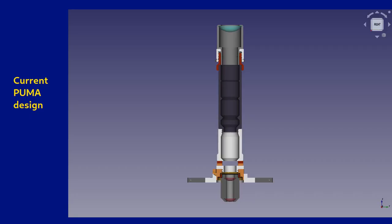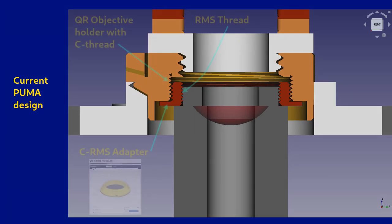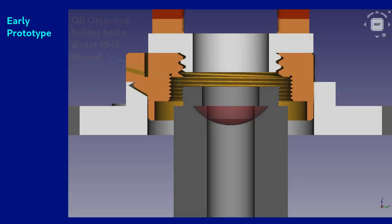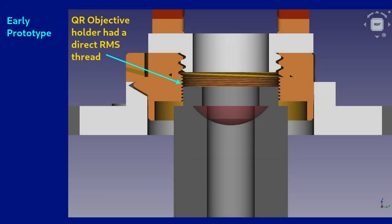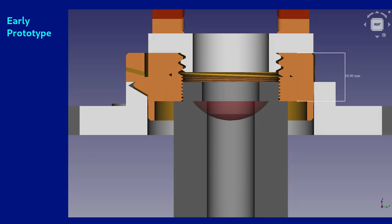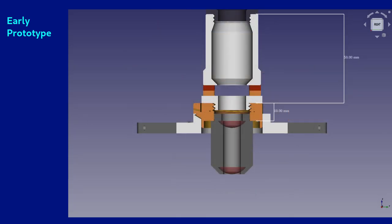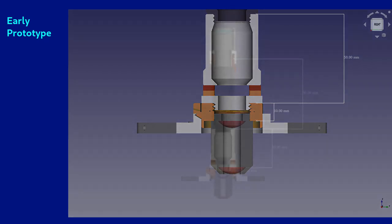This 1mm undershoot error is due to the use of the C to RMS adapter in the quick-release objective holder. In the early prototypes of Puma, I did not use a C-mount thread in the quick-release objective holder, but a direct 3D printed RMS thread, and the quick-release objective holder is 10mm high. The filter block attached to it, either the simple or the advanced filter block, adds a further 50mm. So, the total length from the flange of the objective to the top of the filter block was 60mm in the original Puma prototypes, prior to instituting the C to RMS adapter.